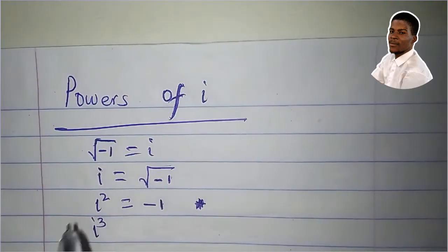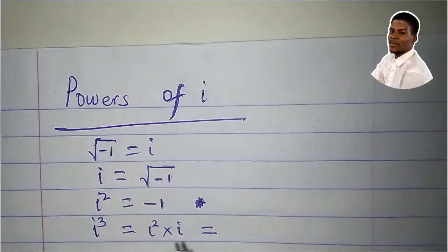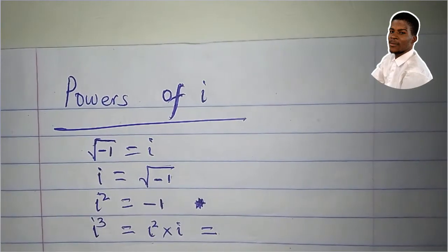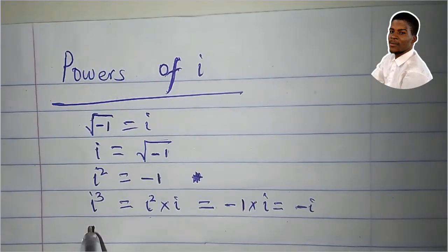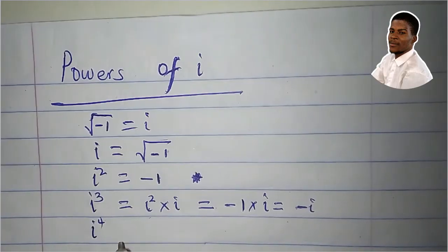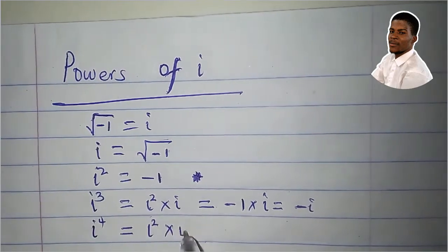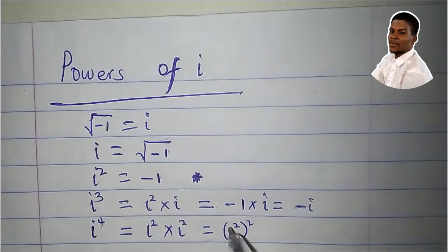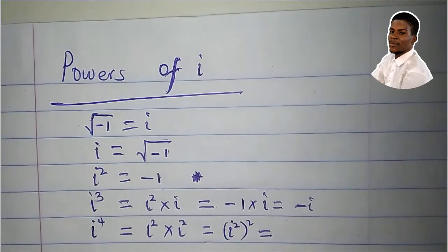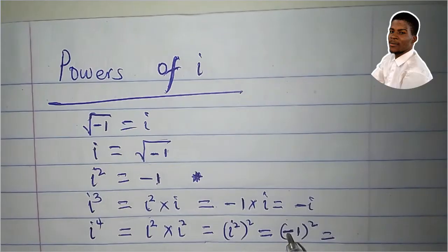What would be the value of i cubed? i cubed is i squared times i, and i squared is minus 1, so that would be minus 1 times i, which equals minus i. What would be i to the fourth? i to the power of 4 can be written as i squared times i squared, which is i squared all squared. i squared is negative 1, so that's negative 1 all squared, which equals 1.